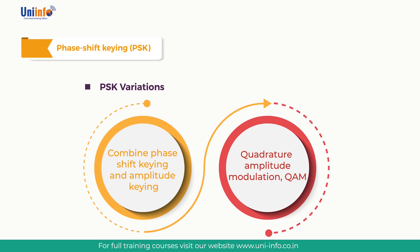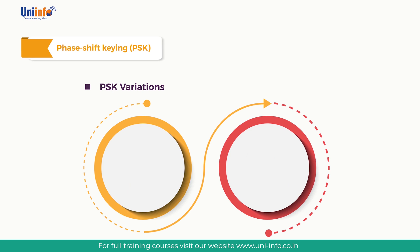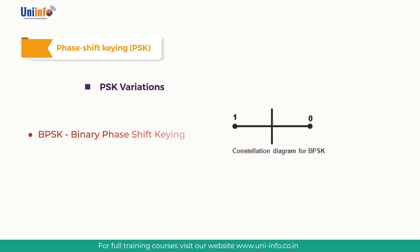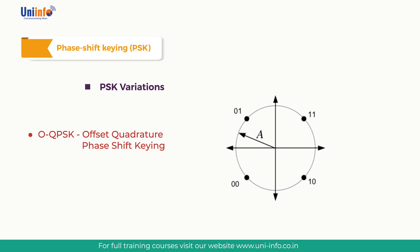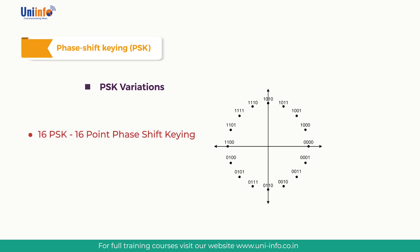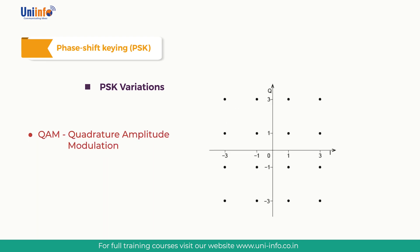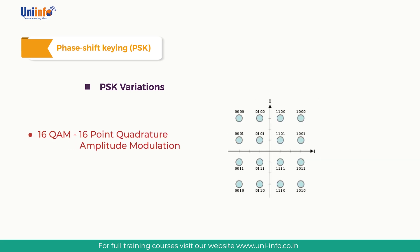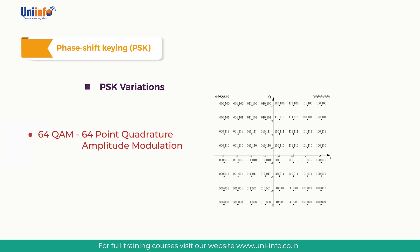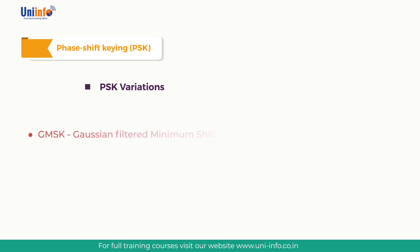Commonly used forms of phase shift keying and related modulations include: PSK (phase shift keying), BPSK (binary phase shift keying), QPSK (quadrature phase shift keying), OQPSK (offset quadrature phase shift keying), 8-PSK (8-point phase shift keying), 16-PSK (16-point phase shift keying), QAM (quadrature amplitude modulation), 16-QAM (16-point quadrature amplitude modulation), MSK (minimum shift keying), and GMSK (Gaussian filtered minimum shift keying).